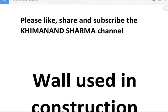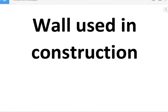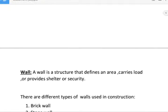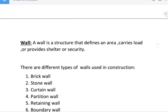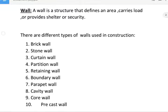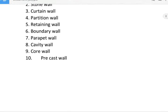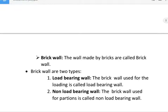Hello everyone, please like, share, and subscribe to the Khemadana Sharma channel. Today's topic is walls used in construction. A wall is a structure that defines an area, carries load, or provides shelter or security. There are different types of walls used in construction: brick wall, stone wall, curtain wall, partition wall, retaining wall, boundary wall, parapet wall, cavity wall, core wall, and precast wall. These are discussed one by one.